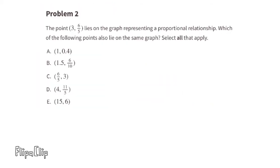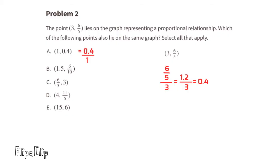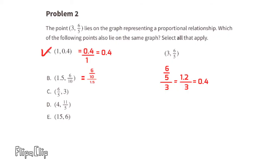Problem number two: the point (3, 6/5) lies on the graph representing a proportional relationship. Which of the following points also lie on the same graph? Select all that apply. Comparing 6/5 to 3: 6/5 is four-tenths the size of 3. The same ratio applies to point A — four-tenths the size of one.